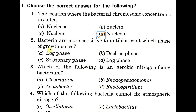Question number two: bacteria are most sensitive to antibiotics at which phase of the growth curve? A: log phase, B: decline phase, C: stationary phase, D: lag phase. Referring to the typical bacterial growth curve, bacteria are most sensitive when they are in the actively growing phase, which is called the log phase. So the correct answer is A, log phase.